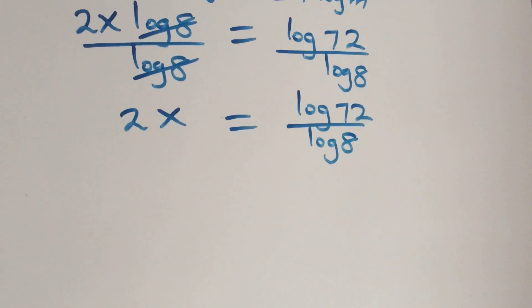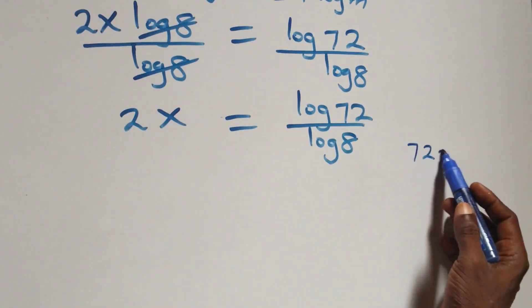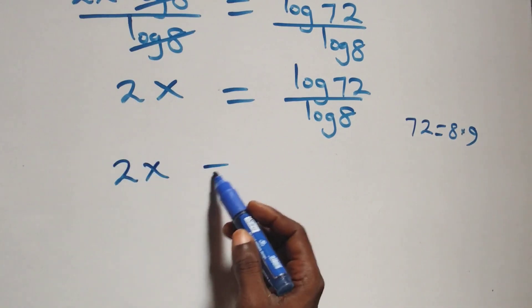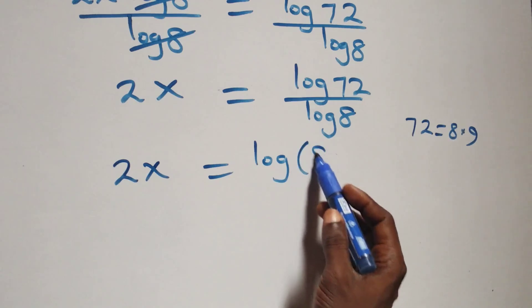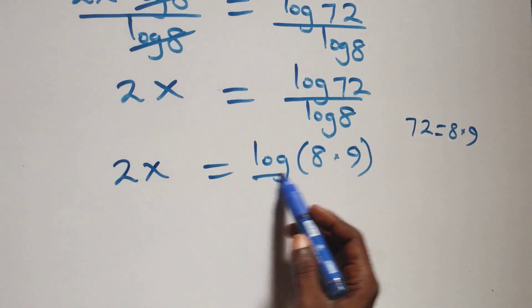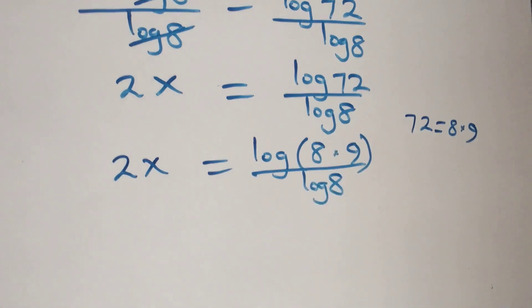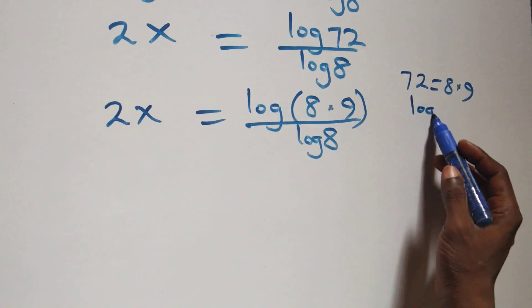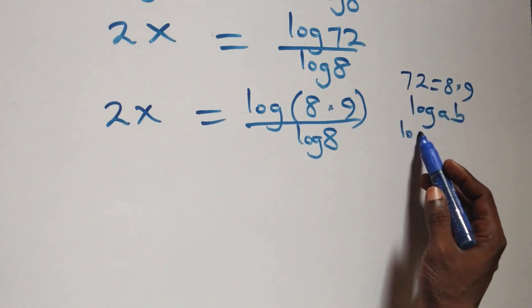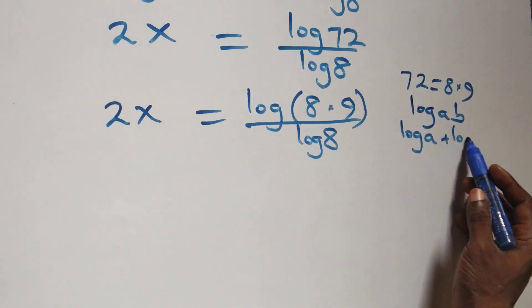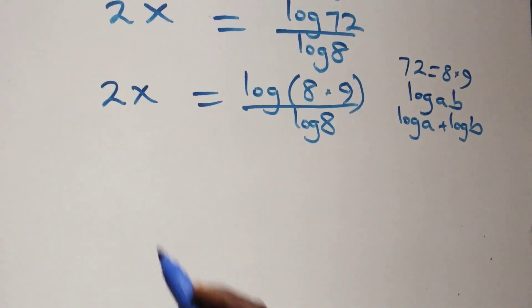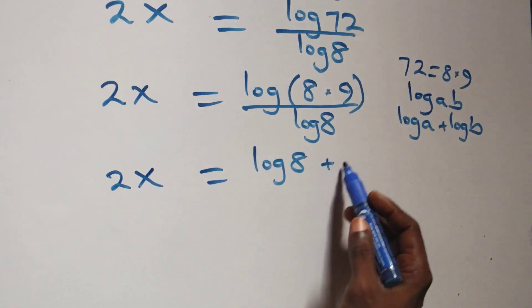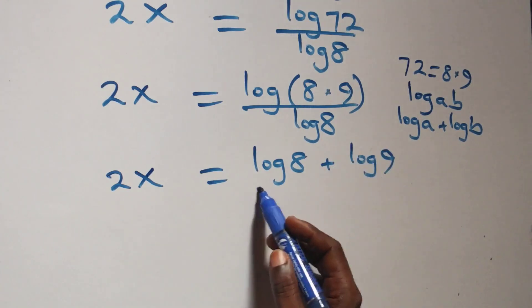From here, we can write 72 as 8 times 9. So this becomes 2x equals log(8 times 9) over log 8. We then apply the law of logarithms: log of a times b equals log a plus log b. So this becomes 2x equals log 8 plus log 9, all over log 8.